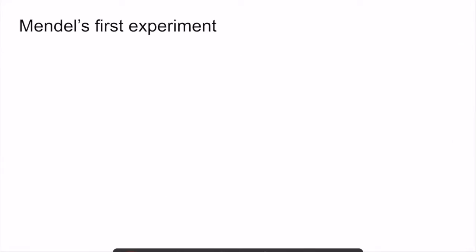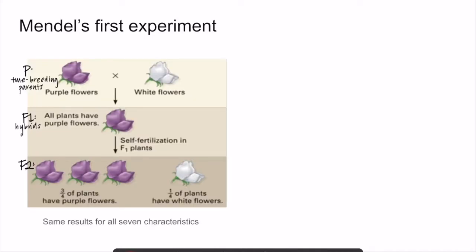Now I want to begin talking about Mendel's first experiment. Mendel crossed two different true breeding lines — purple flowers crossed with white flowers. In the F1 generation, Mendel observed that all plants had purple flowers. Then when he crossed those F1 hybrids with each other, he observed that in the F2 generation, three-fourths of the plants had purple flowers while one-fourth had white flowers — essentially a three-to-one ratio of purple to white. He repeated this for all the different characteristics and observed these same results: only one trait appeared in F1, and a three-to-one ratio of phenotypic traits appeared in F2.